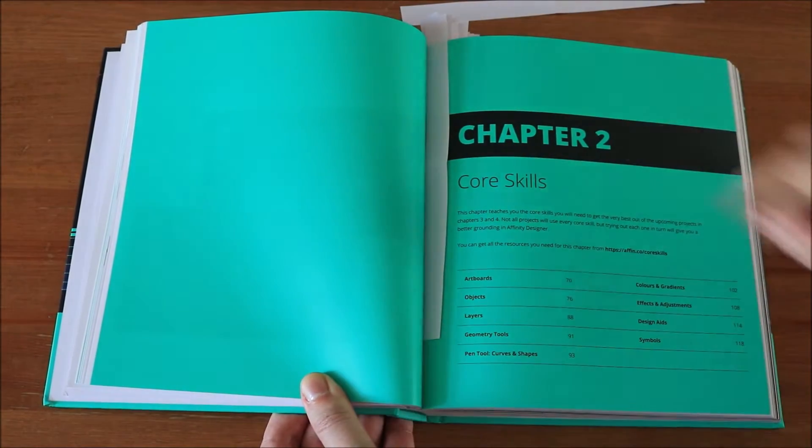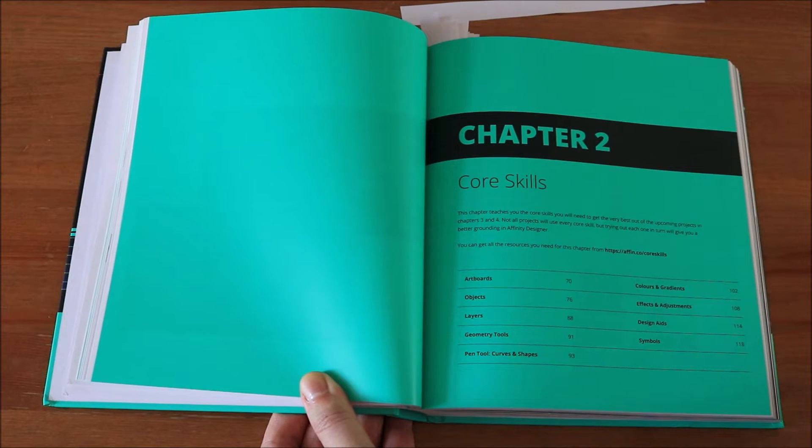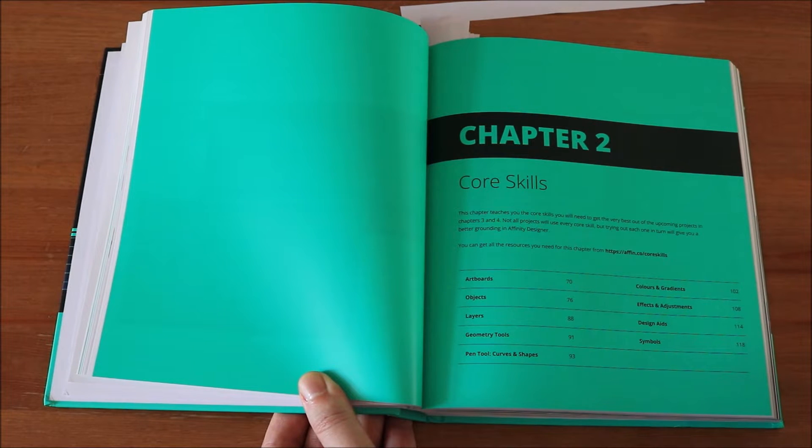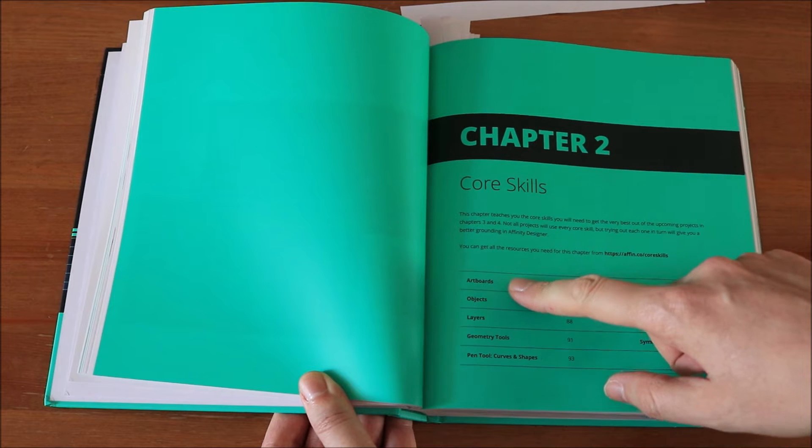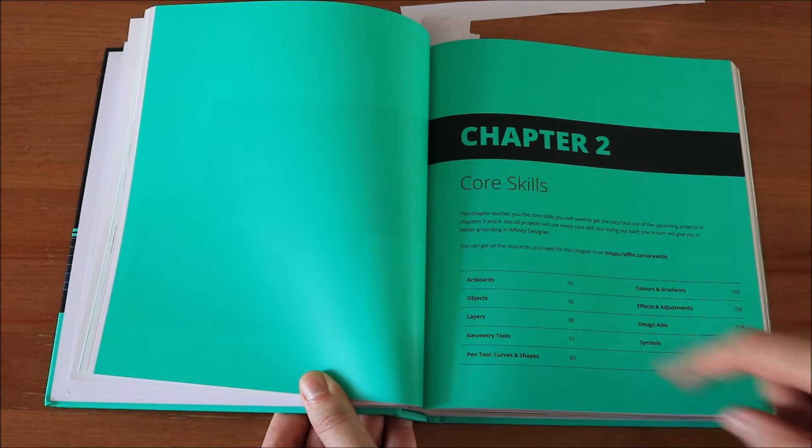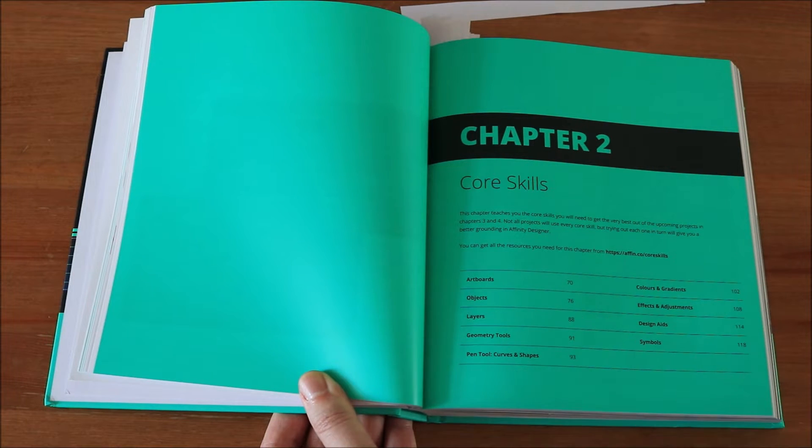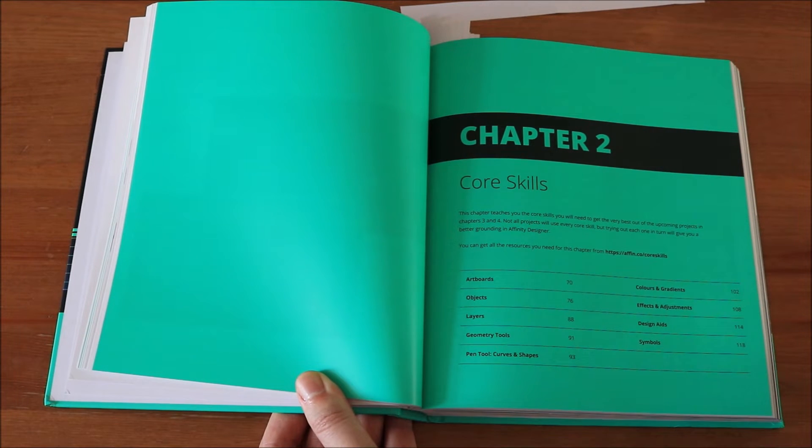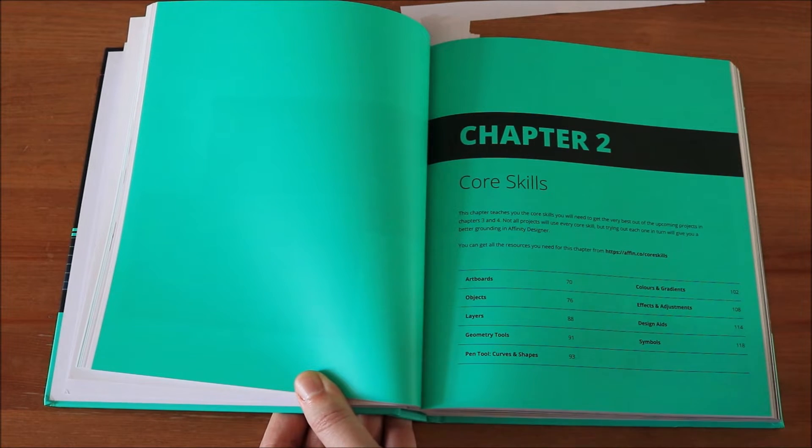Let's go on in the book. And here we already have chapter two. So I'm just showing you samples of the chapters, not the whole book, of course. In this part, you can see you're going to learn the core skills, which is really important. So you should do this chapter first before you start with the art projects. Again, they explain how to work with the artboards, what objects are and how to work with them, what layers are, geometry tools, pen tools, curves and shapes. So this is what you use mainly for vector graphics because they are mathematical lines. So curves and shapes are the basic core element they are made of. Then you have colors and gradients. Gradients are extremely important in designing with vectors. So you need to understand them very well and how to use them and how to, for example, create a 3D look with the right appliance or usage of gradients. Then you have effects and adjustments, design aids and symbols.